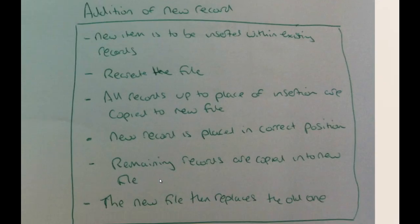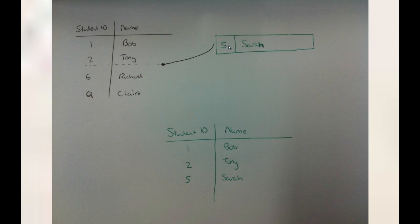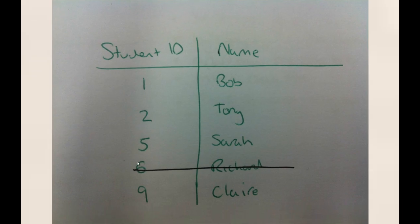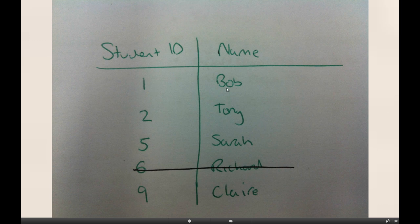When adding a new record to a sequential file, it is inserted within the existing records in the correct position, which means we have to recreate the file. All records up to the insertion point are copied to the new file, the new record is placed in the correct position, and the remaining records are copied after it. For example, to add Sarah with ID 5, we copy the first two records, add Sarah, then append the rest — and that new file is kept while the old one is discarded.